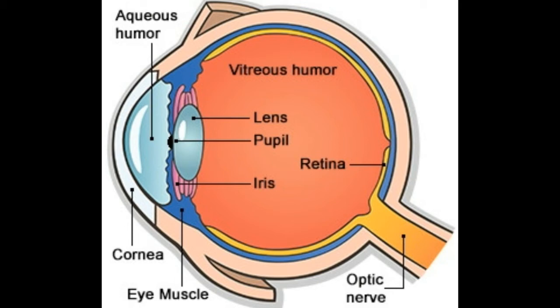Vitreous humor — it acts as a filler and covers the space between the lens and retina. It also provides protection to the lens. It makes up about two-thirds of the total volume of the eye and is composed mainly of water. Retina — it is a membrane responsible for converting the light falling on it into electrical impulses that can be sent to the brain. The retina contains light-sensitive photoreceptor cells called rods and cones. The rods help in black and white vision and for seeing in dim light, while the cones help in daytime and color vision.